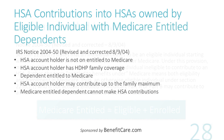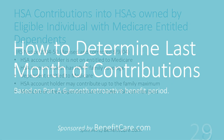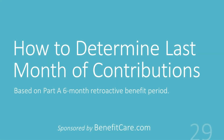What if an HSA-eligible individual with family coverage has a Medicare-entitled spouse? According to the IRS 2004 notice, the eligible individual with a high-deductible health plan with family coverage can contribute up to the family maximum, even though their dependent is on Medicare. The dependent cannot contribute. But how does an individual account holder who is no longer an HSA-eligible individual — because they are now entitled to Medicare — determine their last month of contributions?